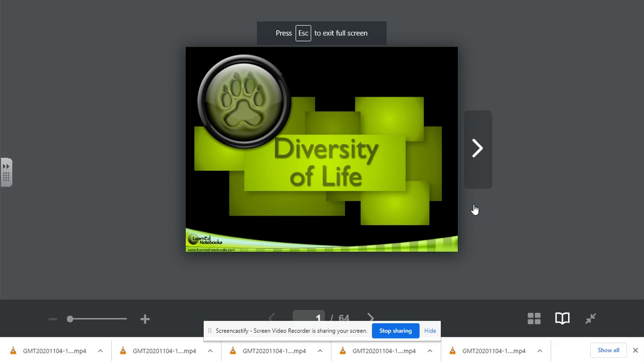Good afternoon, scientists. This is Mrs. Geis, and today we're going to be starting a new booklet in our LearnEd booklet collection. I want you to go ahead and take out the green booklet that's entitled Diversity of Life. Now, this unit will also sometimes be referred to as evolution because we're going to be learning about how species adapt and change over time. That adaptation and changing of a species in order to help it survive is known as evolution. Go ahead and take out your booklet and open it up to page six, and we'll get started.